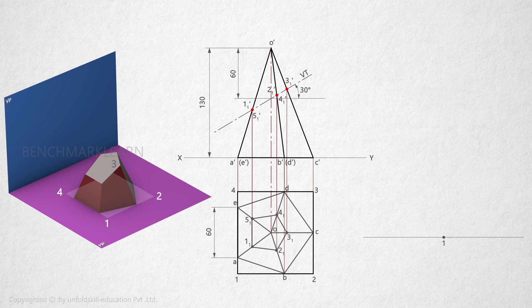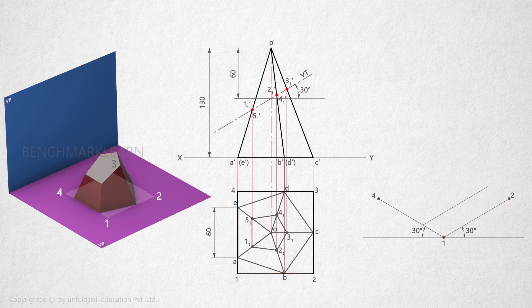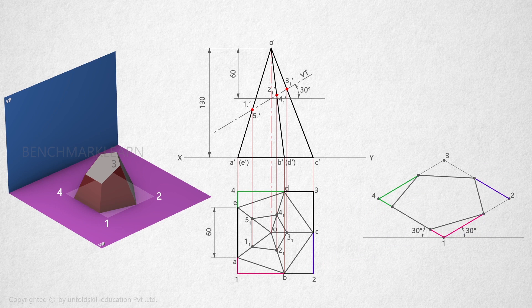Draw the horizontal line, mark point 1 at anywhere on the line, and draw the isometric axis inclined at 30 degrees. Now take the distances from the orthographic view and mark points 2 and 4. Draw parallel lines to get point 3. Take the distances and mark the bottom corners on the pyramid.